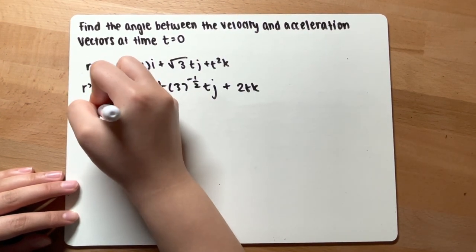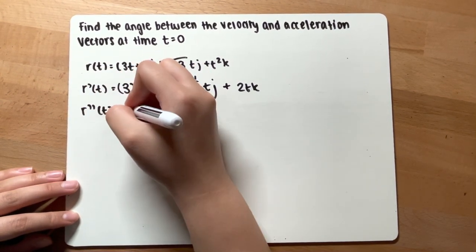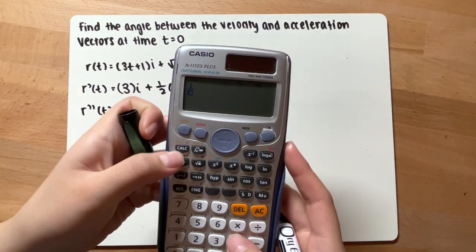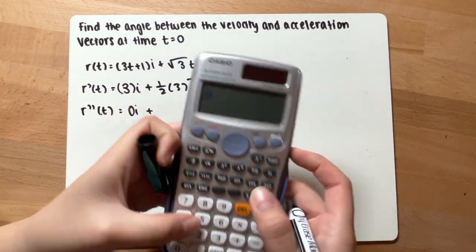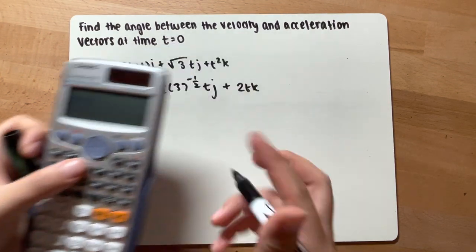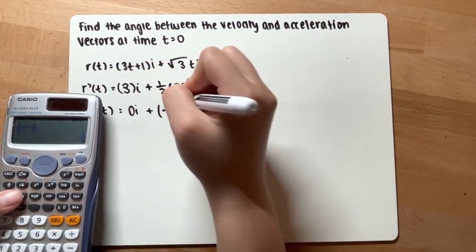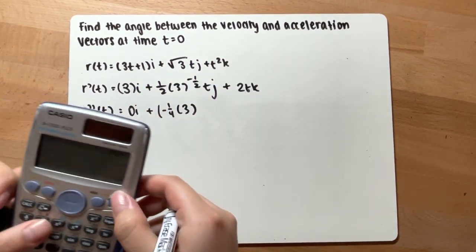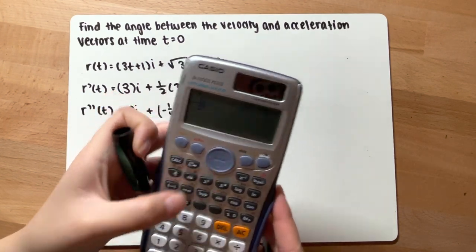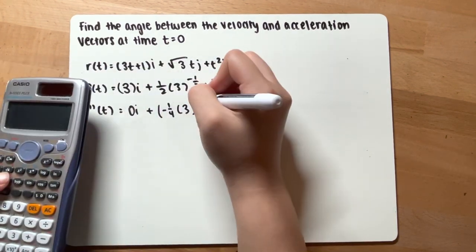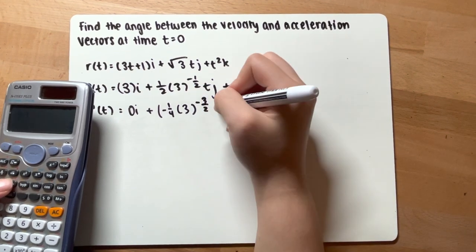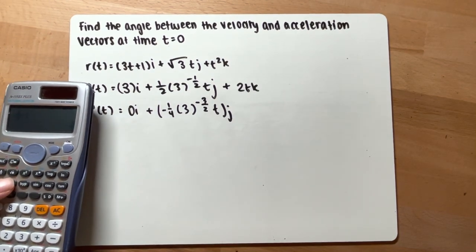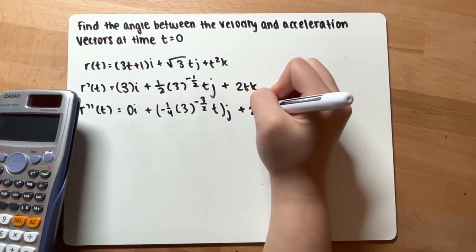To find the acceleration, you find the second derivative of the original function. So it will be 0i plus 1 half times negative 1 half. You get negative 1 fourth, times 3. Negative 1 half minus 1 is negative 3 halves tj. Plus, derivative of 2tk is 2k.